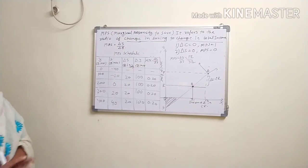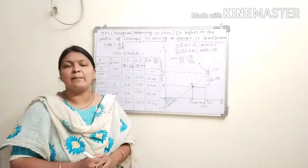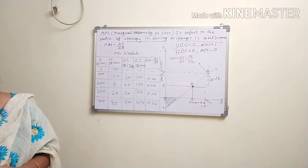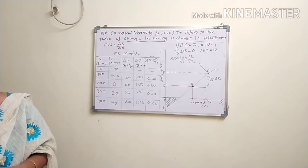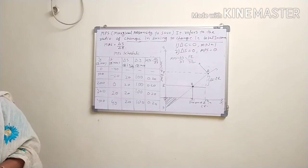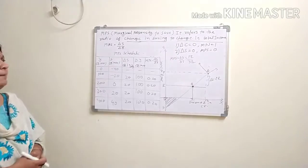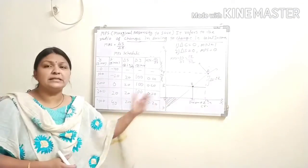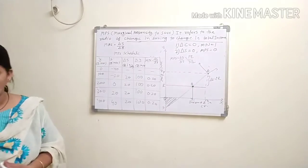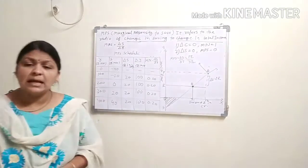Now let's briefly recall APS and MPS. The formula for APS is S upon Y; the formula for MPS is delta S upon delta Y. APS can be less than 0 due to dis-saving. However, MPS can never be less than 0, because the change in saving can never be negative — it is next to impossible that there is no consumption at all. In the next period we will discuss the relationship between APS and MPS.